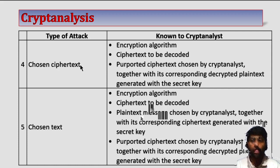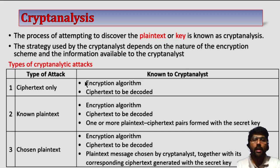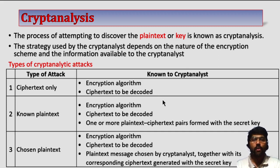The most difficult attack is whenever the attacker knows only the ciphertext — he has only the ciphertext — then it is very difficult to identify the plaintext as well as the key. We assume that the attacker or the cryptanalyst knows the type of encryption algorithm used. One such possible attack is the brute force approach. In brute force, he tries all possible keys to identify which key is the secret key.